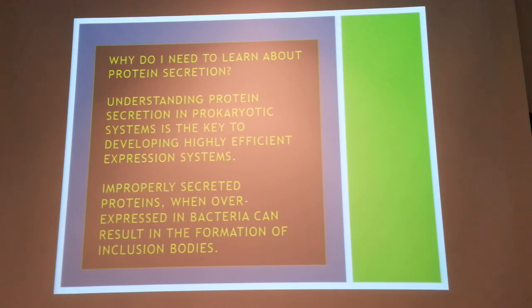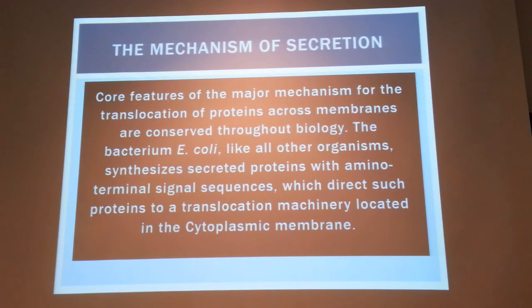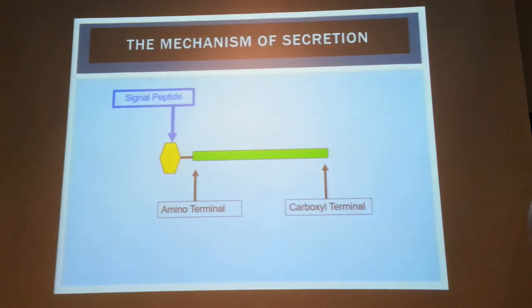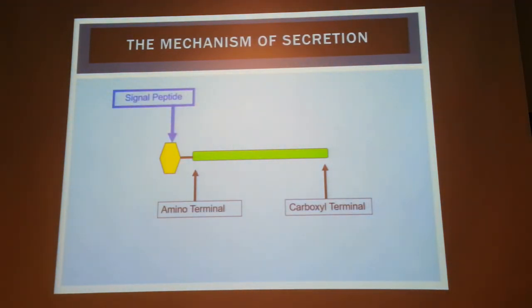Signal peptides can be predicted using specific bioinformatics software. They are located at the amino-terminal end and are usually around 20 to 30 amino acids in length.